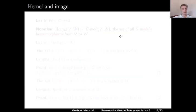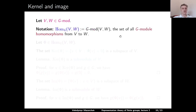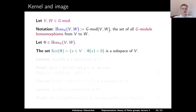Let us now talk about kernel and image. Let V and W be G-modules. We denote by Hom_G(V, W) the set of all G-module homomorphisms from V to W — this is the morphism set in the category G-mod. Let φ be a G-module homomorphism from V to W. The kernel of φ, which is the set of all vectors in V sent to 0 by φ, is a subspace of V.